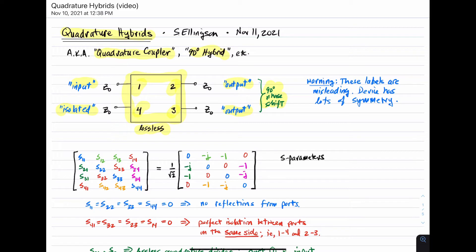These terms can be a little bit misleading, and the reason is because this device has a lot of symmetry. You can use these ports in a lot of different ways. This can be a divider, it can be a combiner, it can be a coupler. There's lots of uses.